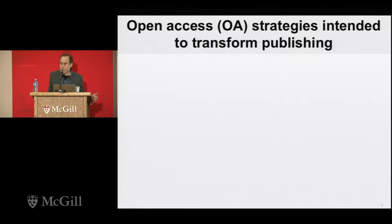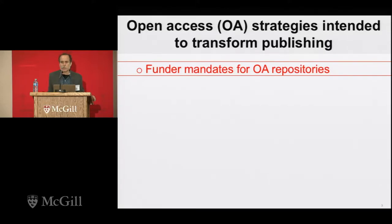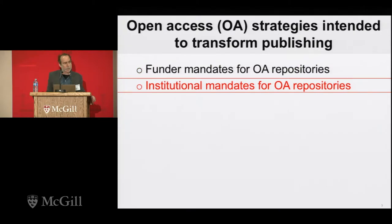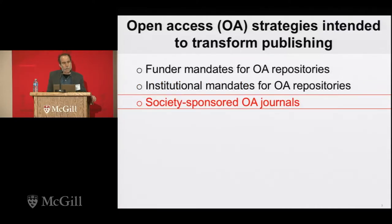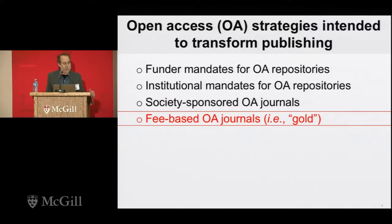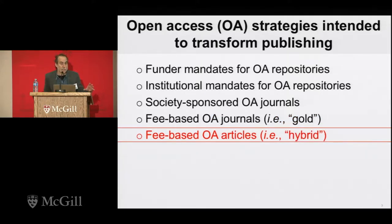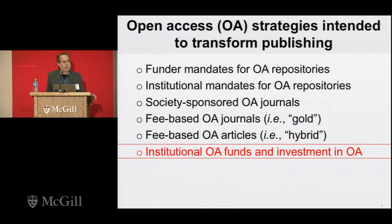There have been many strategies undertaken over the last 15 years. One is funder mandates for open access repositories — the green open access — such as the NIH large repository and, at the University of California, the eScholarship repository. Individual institutions have also decided to put the work of their scholars in their own repositories. We've also seen the birth of open access journals — society-sponsored journals, fee-based gold open access journals like PLOS and BioMed Central, hybrid articles within subscription journals, and institutional open access funds to support scholars publishing in open access journals.